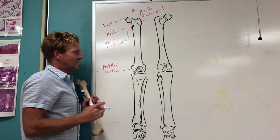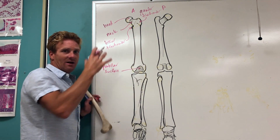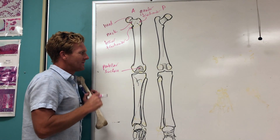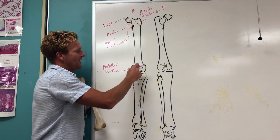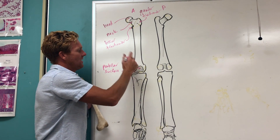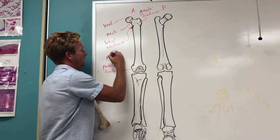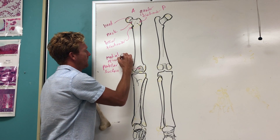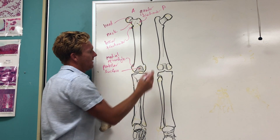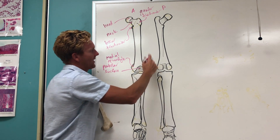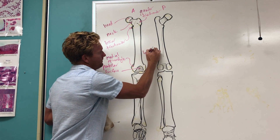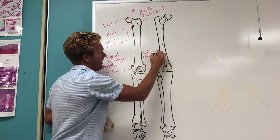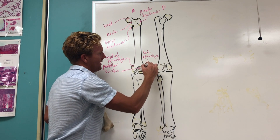As we get down to the distal end, you'll see that the bone kind of flanges out on each side — those are the epicondyles. You're going to have an epicondyle on the medial side, so the medial epicondyle is located right here. And that leaves us with the lateral epicondyle, which is located right here.